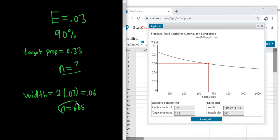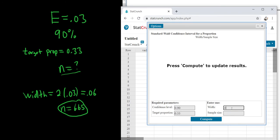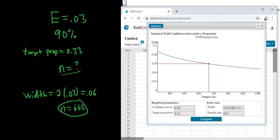Notice when I hit Compute, this changes. Watch. Let me do it again. I'm going to type in the width, 0.06, and I hit Compute. Boom, and it changes.